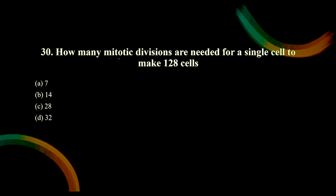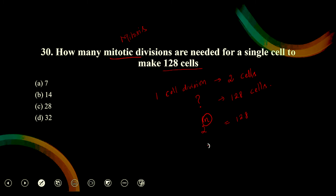How many mitotic divisions are needed for a single cell to make 128 cells? In mitosis, from one cell division we get two cells. The formula is 2 to the power N. We have to find N. 2 to the power 7 equals 128. So the correct option is 7, which is option A.